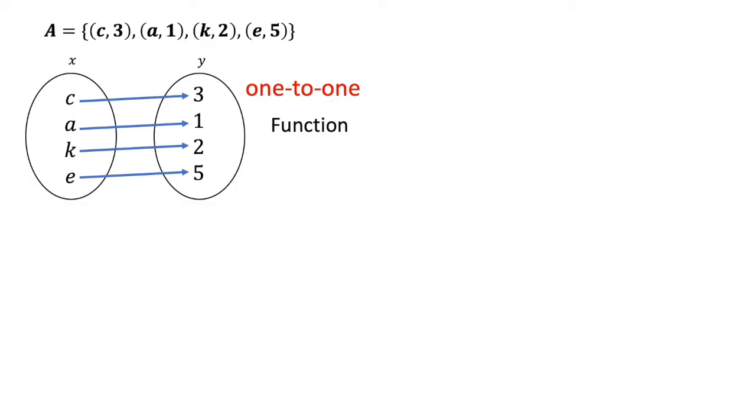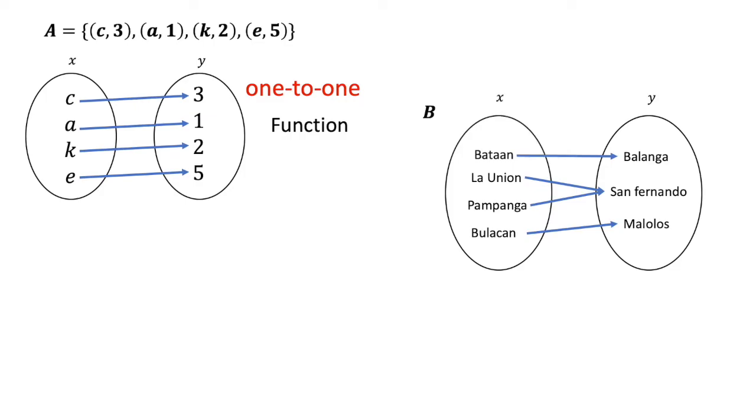Now let's look at our example for B. Let's say the set of examples for the domain are the provinces located in North Luzon and the range is their corresponding cities. The relation is a many-to-one relation. If the relation is many-to-one, the relation is a function.